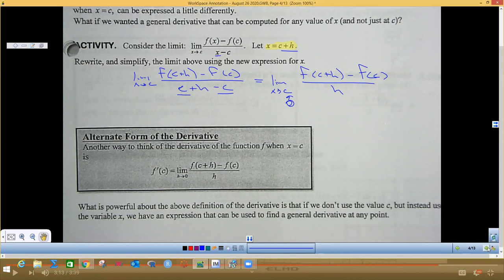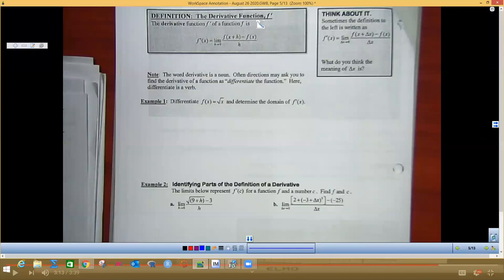The definition of the derivative of a function f prime is going to be this deal, where we're going to be using h's instead of c's in here. And so we actually have three definitions of a derivative. This is one of the main ones right here, then over here it says think about it, sometimes the definition to the left is written as this function where they have a delta x instead of h.